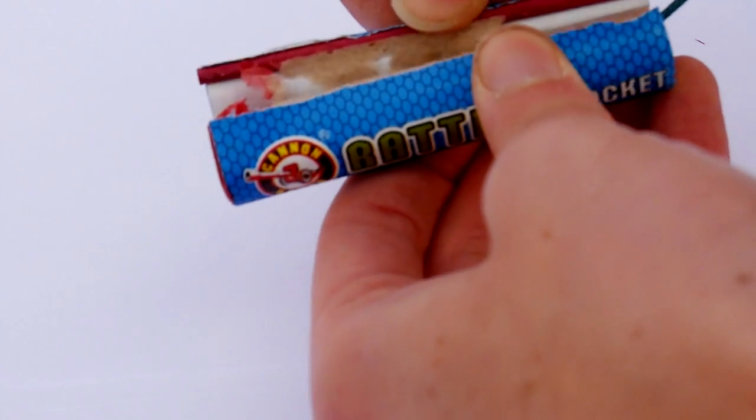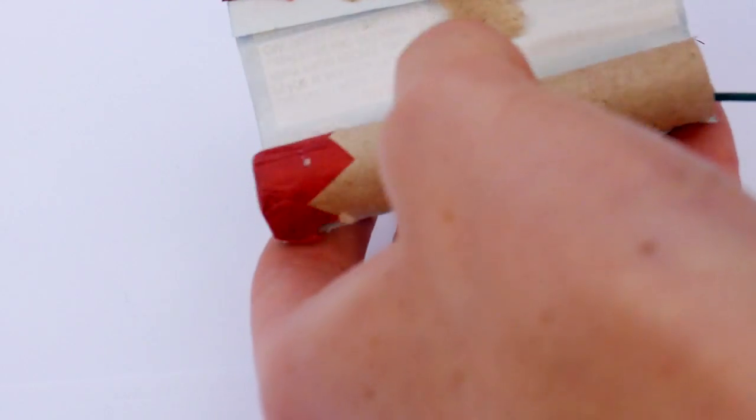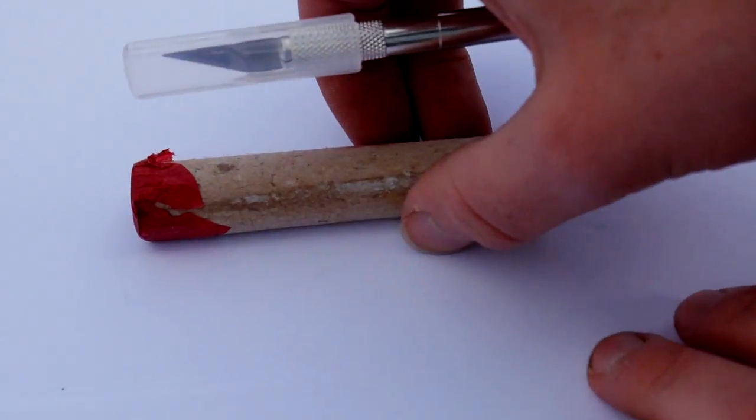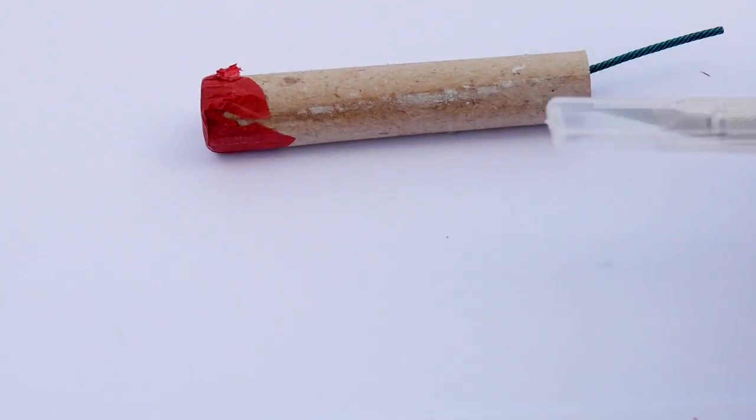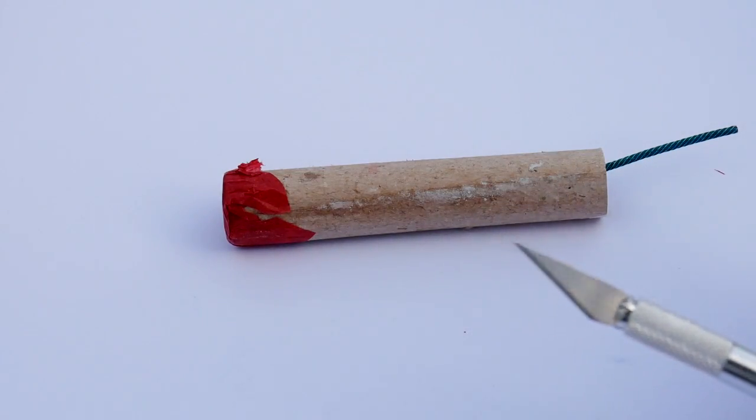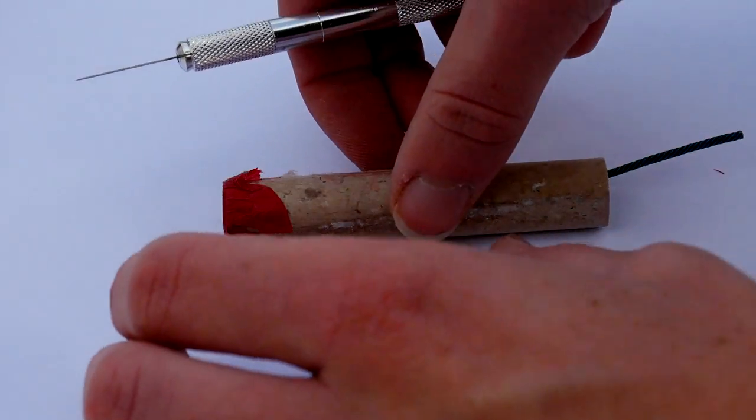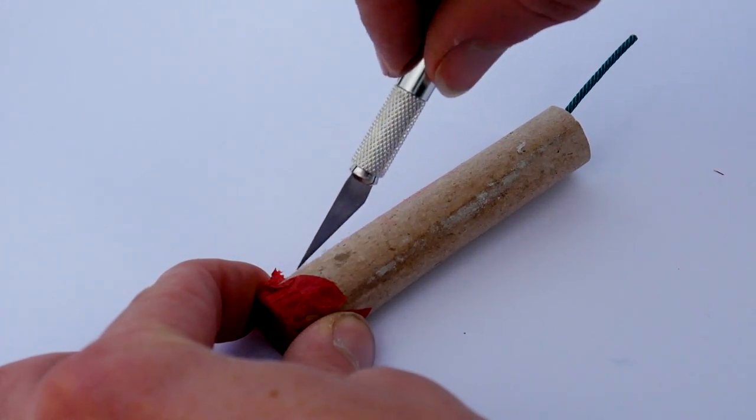I think we'll just remove this part first. Get rid of the casing and look at that. I put it on some paper here so it's easy to pick up after the contents spill everywhere. So we've got our trusty old razor here. Let's slice it open and see what comes out.